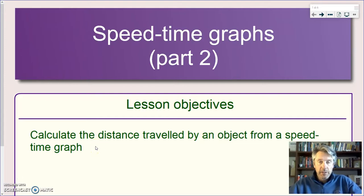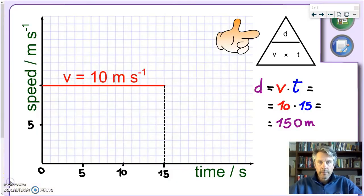In the previous lesson we have seen how to interpret the different kinds of shapes in a speed-time graph, so when we have an object which is not moving, when we have an object moving at constant speed, or when we have an object moving with positive or negative acceleration. Today we're going to push forward the kind of information that we can get from a speed-time graph. Before we get to some general rule about how to use speed-time graphs to find the distance traveled by an object, let's see some examples.